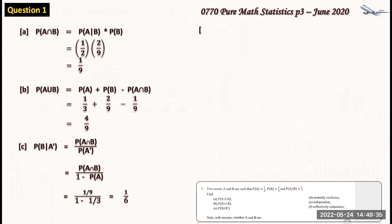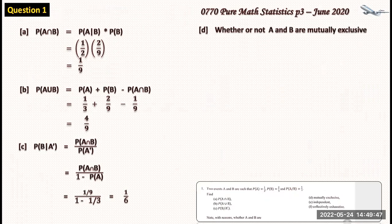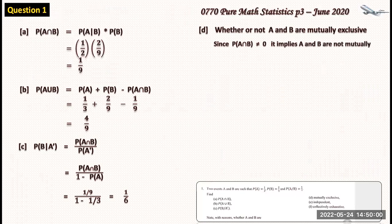For part (d), we state with reasons whether A and B are mutually exclusive. Two events A and B are mutually exclusive if P(A∩B) = 0. In our case, P(A∩B) is one over nine, which is not equal to zero. Therefore A and B are not mutually exclusive, since mutual exclusiveness requires P(A∩B) = 0, which is not the case here.